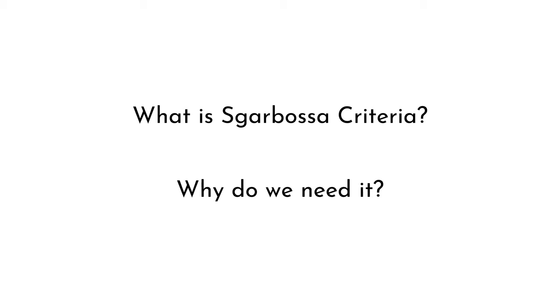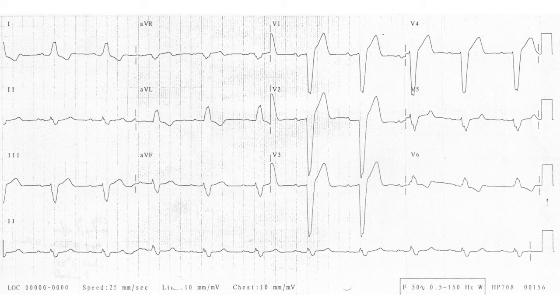So what is Sgarbossa Criteria and why do we need it? This is the ECG of a patient with uncomplicated left bundle branch block. As you can see, it fulfills all the ECG criteria of left bundle branch block like a wide QRS, dominant S wave in V1, broad monophasic R waves in the lateral leads, etc. However, if you look at the ECG carefully,